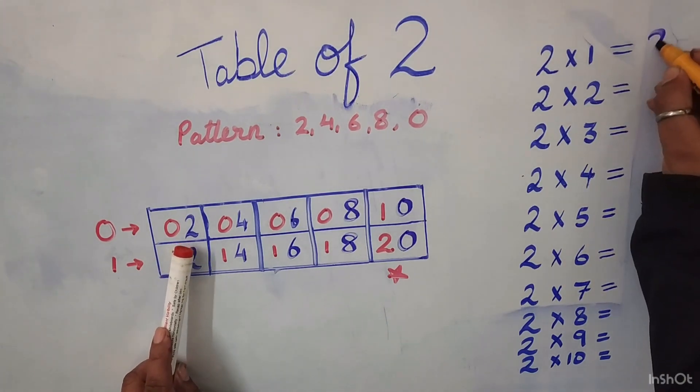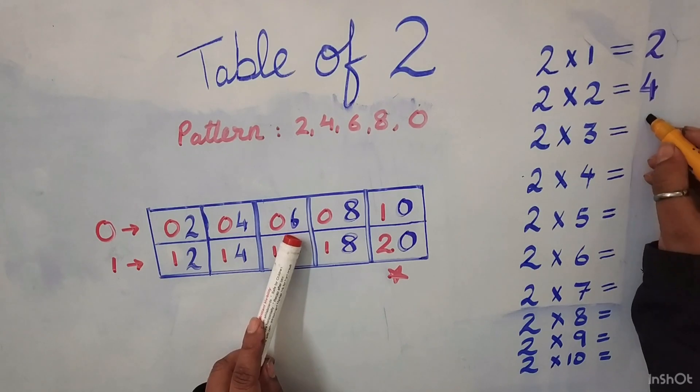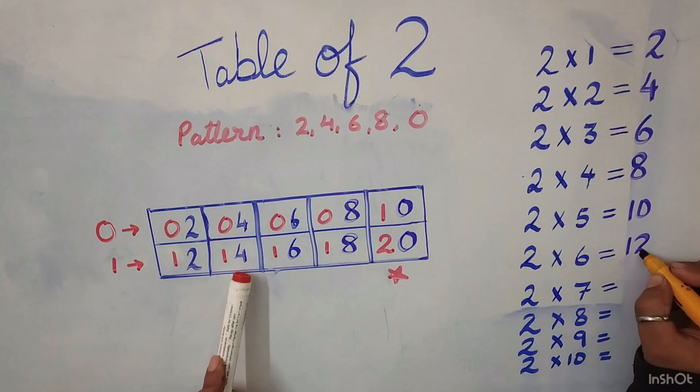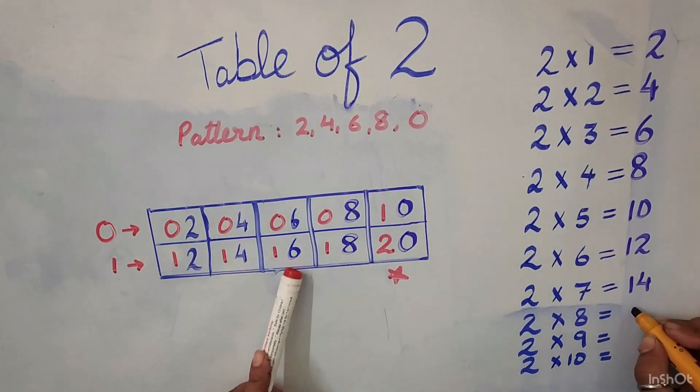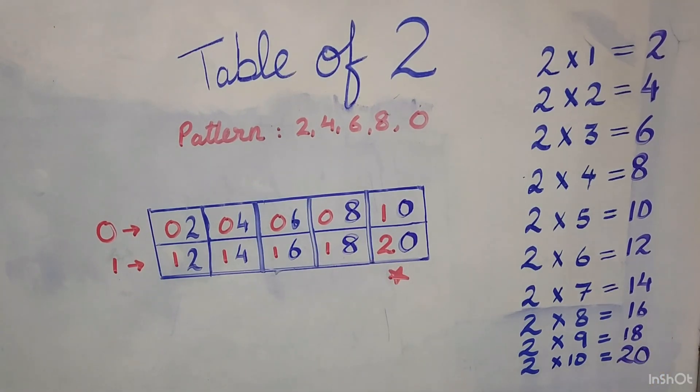2 1's are 2, 2 2's are 4, 2 3's are 6, 2 4's are 8, 2 5's are 10, 2 6's are 12, 2 7's are 14, 2 8's are 16, 2 9's are 18, 2 10's are 20.